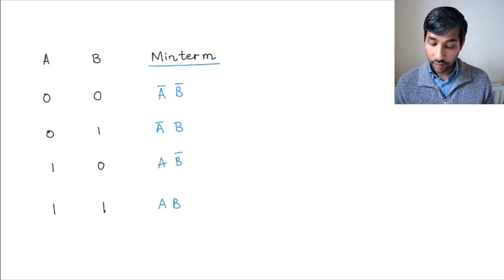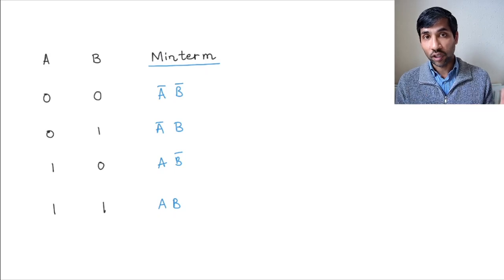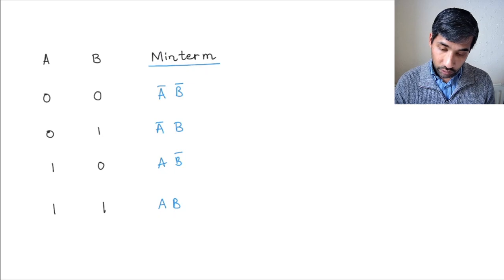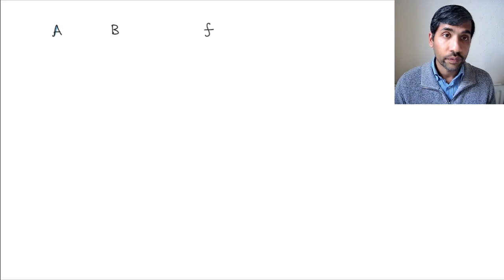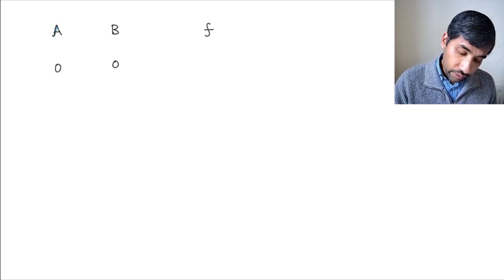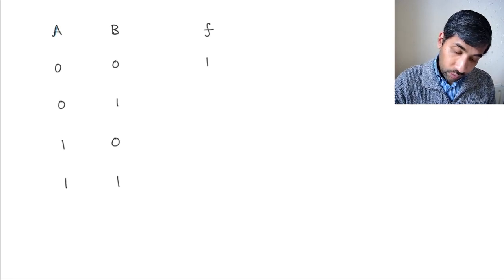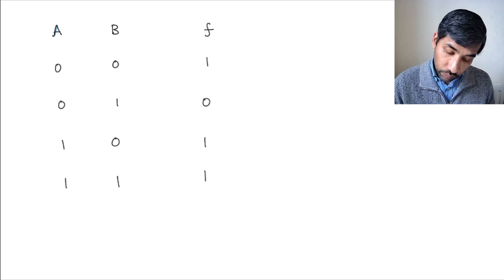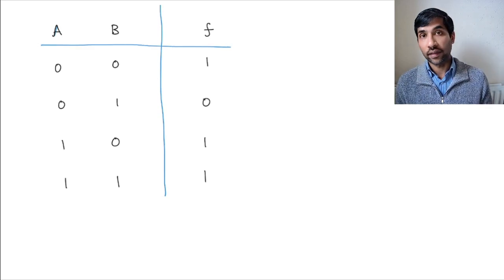Let's draw a basic truth table for a logic circuit with two inputs. So we write inputs a and b, and let's say the output is f. We write the four possible combinations of the inputs, and the output corresponding to these combinations is 1, 0, 1, 1. That's our truth table for this Boolean circuit.